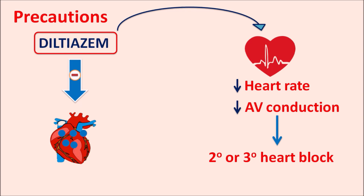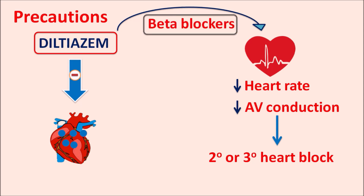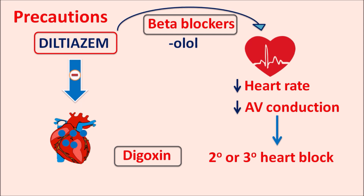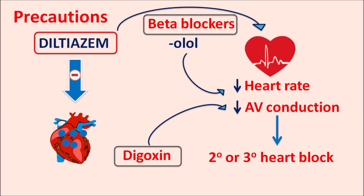This is particularly important when Diltiazem is combined with other cardiovascular drugs. Beta blockers — drugs ending in '-olol' such as metoprolol, atenolol, propranolol, timolol, acebutolol — reduce heart rate. Digoxin, a cardiotonic, reduces AV conduction. When combined with Diltiazem, they can further reduce heart rate and AV conduction, resulting in second- or third-degree heart block. Care should be taken when combining these drugs.